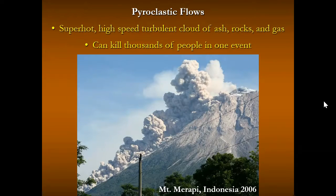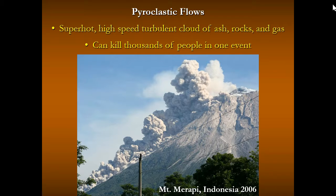Pyroclastic flows are super hot, high-speed, turbulent clouds of ash, rocks, and gas. These can kill thousands of people in one event. In the case of Pompeii, it buried the entire city. These are some of the biggest killers directly from a volcanic eruption. The majority of deaths in the Mount St. Helens eruption were from pyroclastic flows as well.